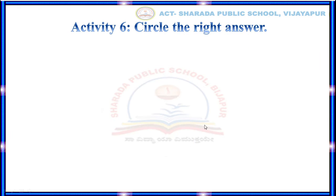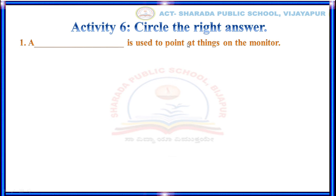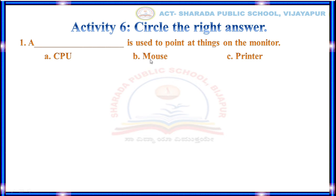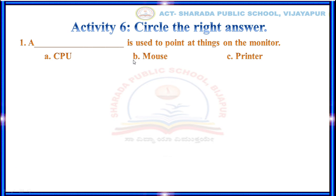Now, let us move to Activity No. 6: Circle the right answer. First question: A dash is used to point at things on the monitor. Options are A. CPU, B. Mouse, C. Printer. Children, can you guess the correct answer? Yes, that is Mouse. Circle the correct answer: Mouse. Now, write Mouse in the given blanks. Similarly, you need to circle the correct answers and write them in the given blanks.